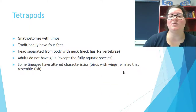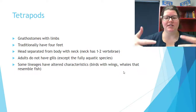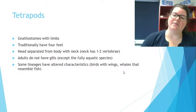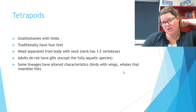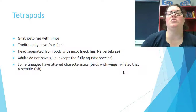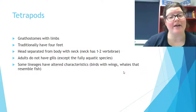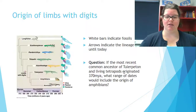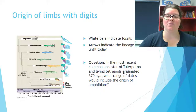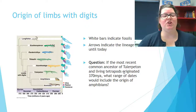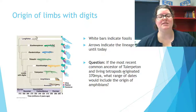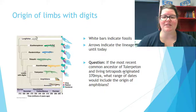Tetrapods are gnathostomes with limbs. Traditionally they have four feet, though adaptations exist — humans have two feet and two hands. The head is separated from the body by the neck, which contains cervical vertebrae. Adults do not have gills unless fully aquatic like dolphins or whales, though embryos do have gills. On the lineage chart, white bars indicate fossil records that extend to modern day — lungfish start a really long time ago and continue to the present.